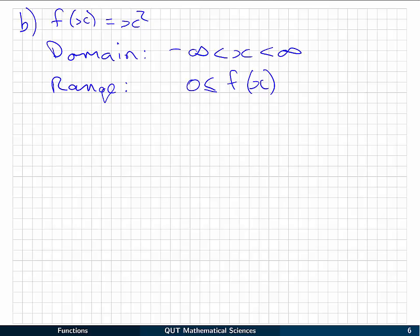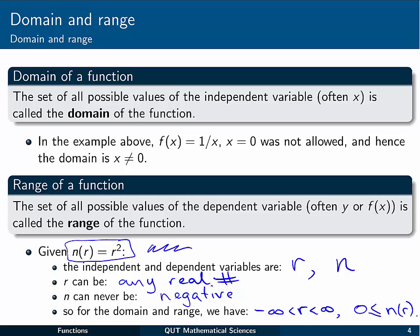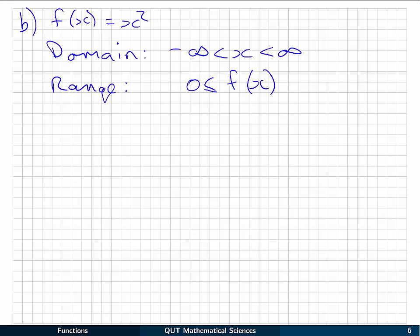Part B, f of x equals to x squared is actually exactly the same example as this one from before. All we've done is change the letters. So we know that the domain will be minus infinity to infinity, and the range will be all positive or zero values. We can't get a negative value if we're squaring it.